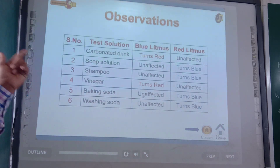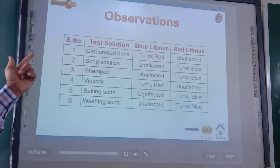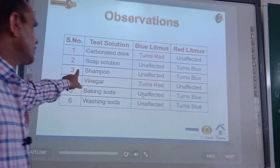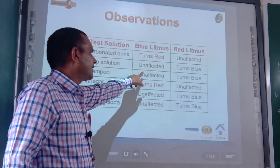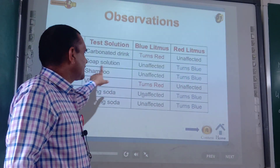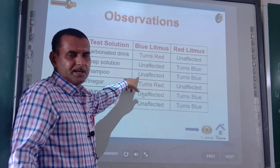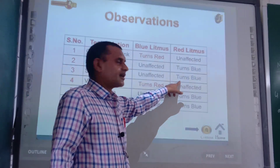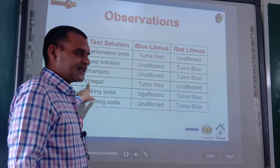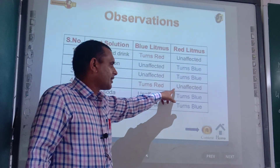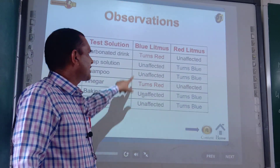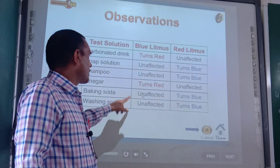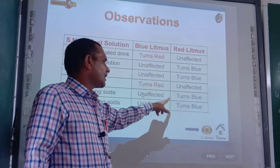Carbonated drink is acidic in nature — it turns blue litmus red but leaves red litmus unchanged. Soap solution is basic in nature — blue litmus remains unaffected but it turns red litmus blue. Shampoo is also basic in nature — blue litmus remains unaffected but it turns red litmus blue. Vinegar is acidic in nature — it turns blue litmus red but leaves red litmus unchanged. Baking soda is basic in nature — blue litmus remains unaffected but red litmus turns blue. Washing soda is also basic in nature — blue litmus remains unaffected but red litmus turns blue.